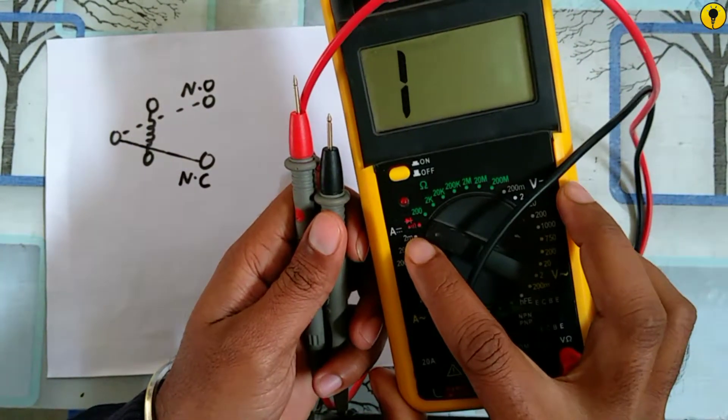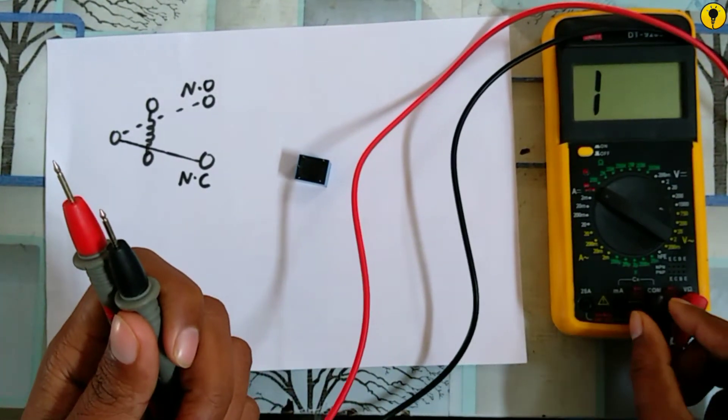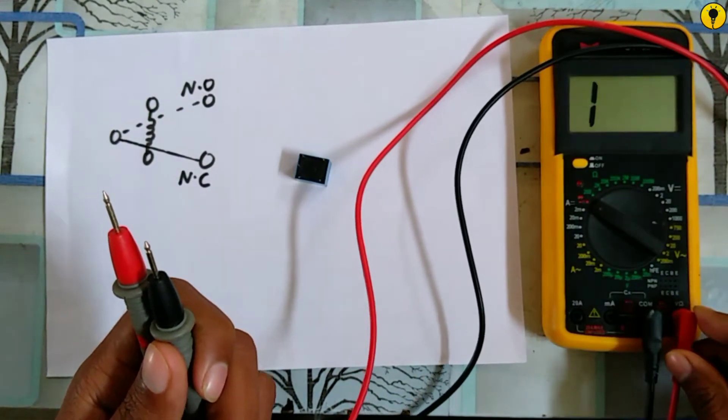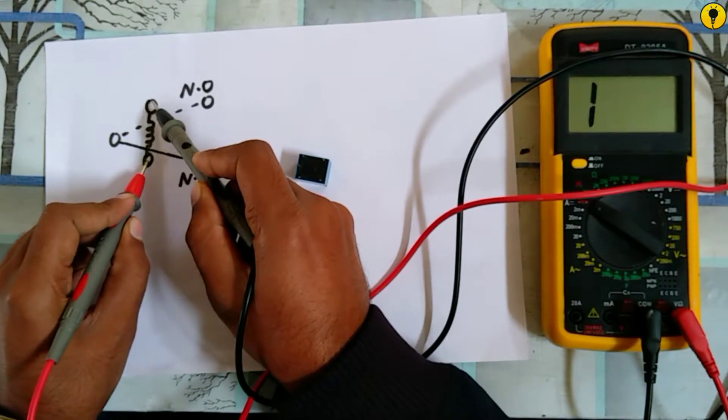To check the coil terminals, this is the continuity sign. Set the probes correctly. Take the probes and apply them to those terminals.